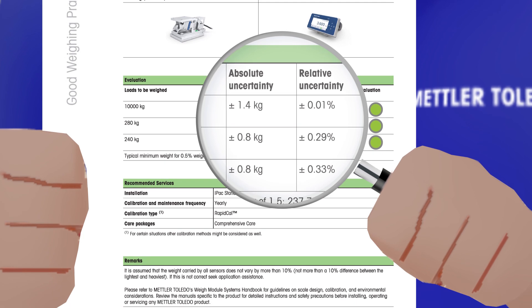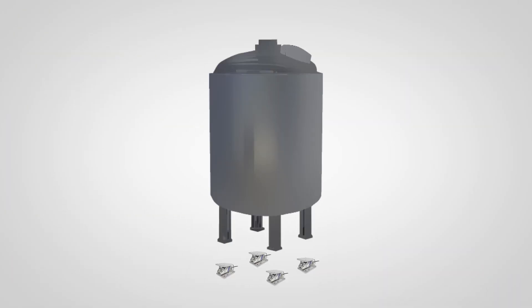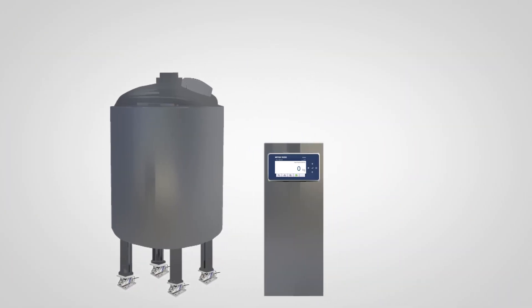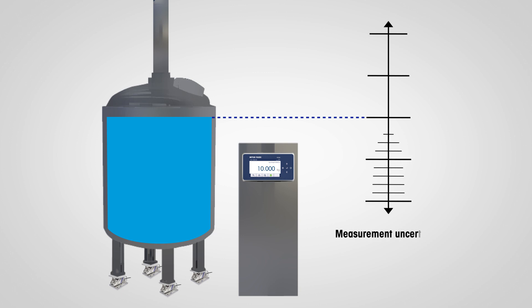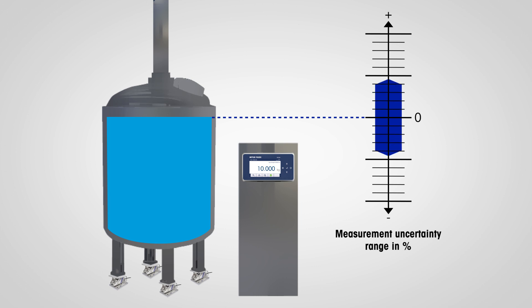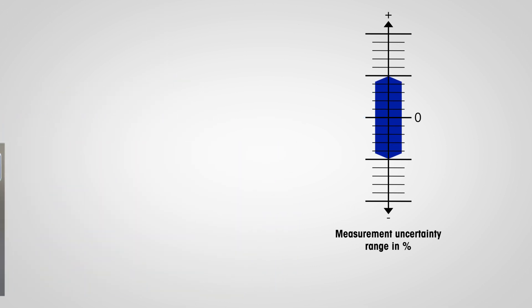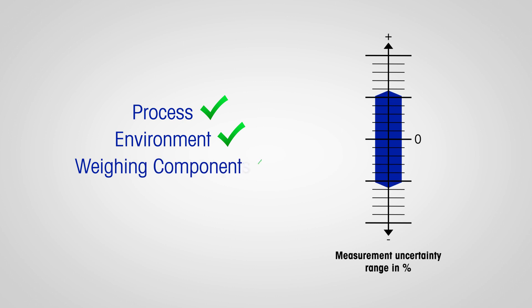How is it done? For customized weighing equipment, measurement uncertainty is one of the most important parameters to be considered. This uncertainty value quantifies how accurate your scale and weighing process are in operation, assuming correct installation and calibration. It is calculated based on your process, environment, and selected weighing components.